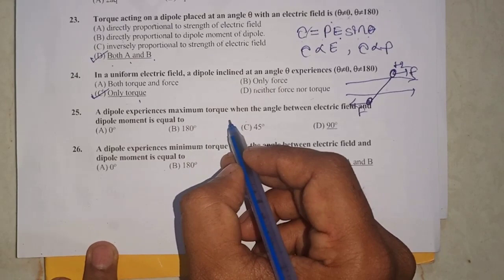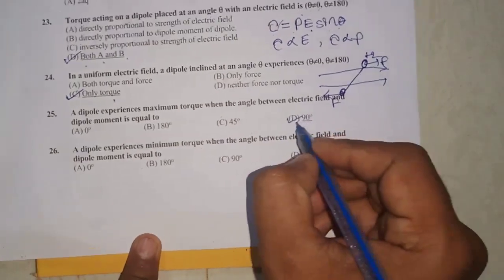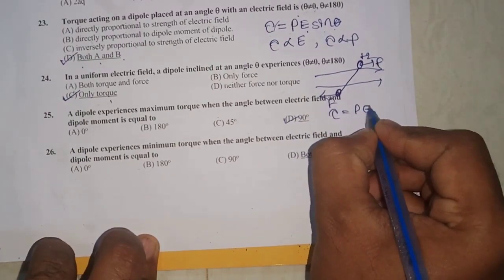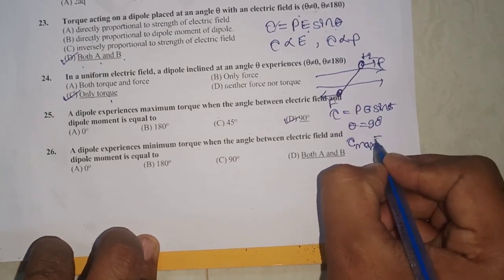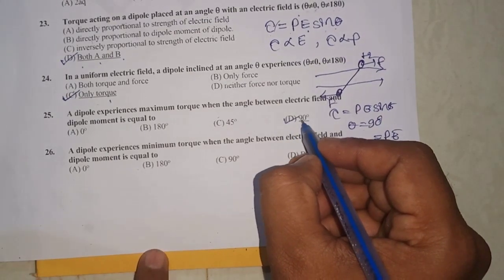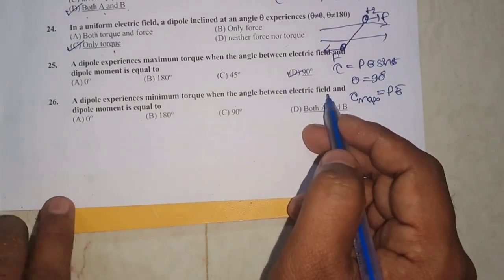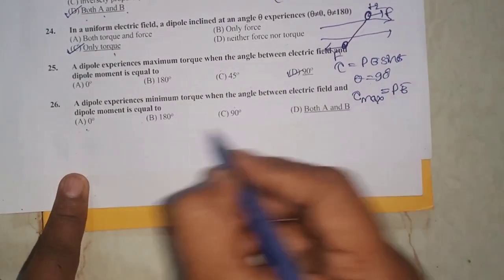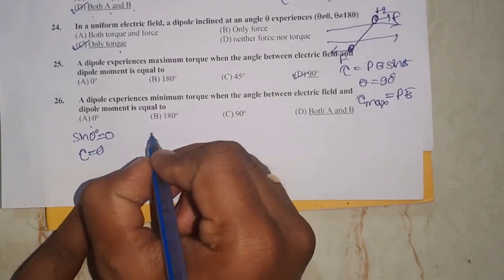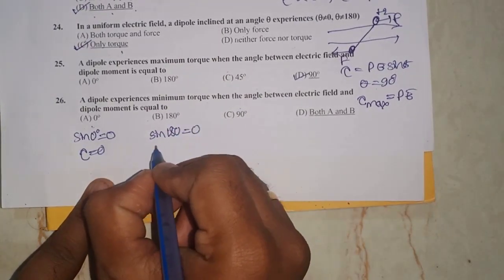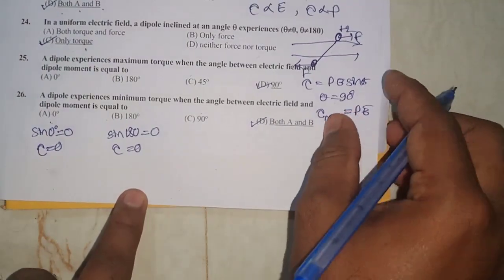Question number 25: a dipole experiences maximum torque when the angle between the electric field and the dipole moment is 90 degrees. Using τ = pE sin θ, if θ = 90°, then τ_max = pE. Question number 26: a dipole experiences minimum torque when the angle is 0° or 180°, since sin 0° = 0 and sin 180° = 0, giving τ = 0. Therefore, both A and B are the correct options.